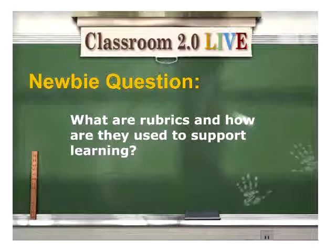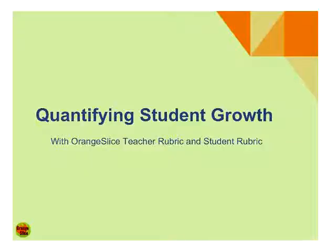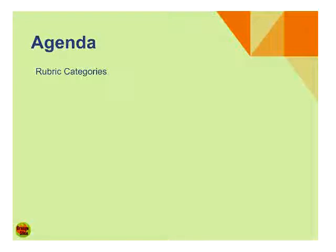So with that, I'm going to go ahead and jump into the presentation. It's all about quantifying student growth using Orange Slice teacher rubric and student rubric. The agenda: I want to first talk about rubric categories because not everybody uses rubrics, and if you're new to rubrics it can be kind of overwhelming. How do I create these categories? What's a meaningful category? You have to change the way you think, change the way you grade, change your perspective. Then getting started with Orange Slice — how does the process begin — then peer review and teacher review, which is important for quantifying a student's grade.